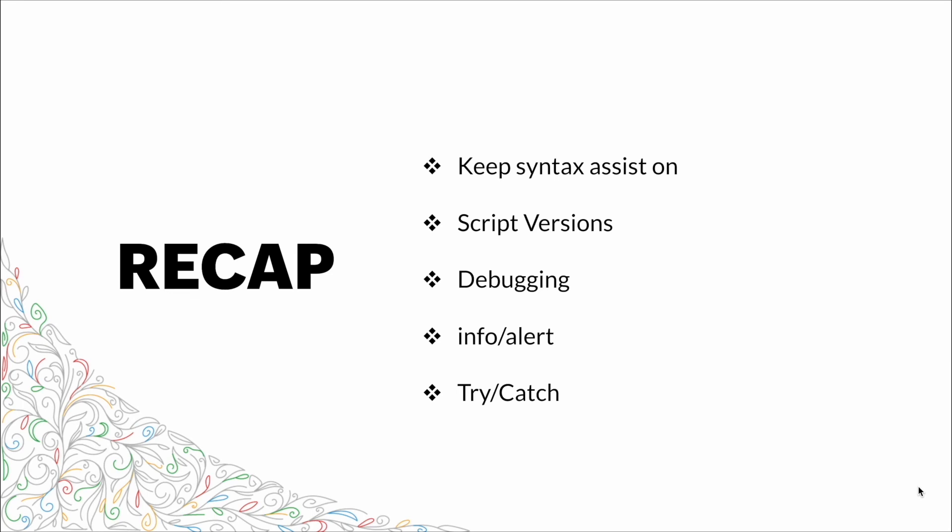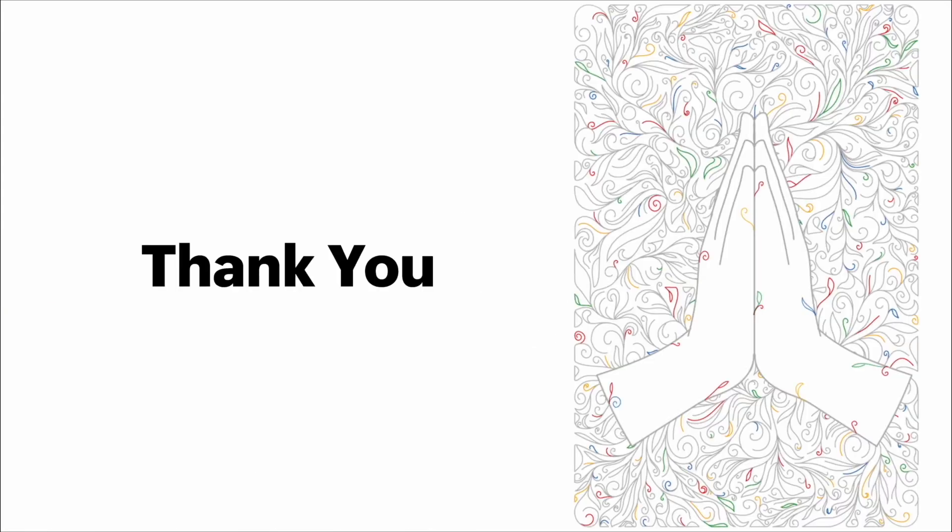A quick recap: we spoke about keeping Syntax Assist on — how valuable it is when writing code to let the editor help you write syntax properly. We spoke about script versioning, which allows you to keep different versions of your script so you don't have to worry about deleting or making changes to your code. We talked about debugging and the several options available with Deluge, like the info and alert features and our try and catch blocks. Make sure you use all these tools, keep track of your code with script versioning, and debug with the options Deluge provides. Thank you, I hope you found this very educational.